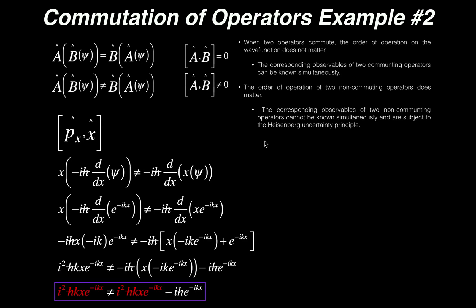In this video we'll look at an example of two operators that do not commute. We're going to use the position operator and the momentum operator in the x direction. For two operators that do not commute, we won't get the same thing on both sides of the equal sign — the order of operation matters. The momentum operator in the x direction is negative i h-bar times the first derivative with respect to x, and the position operator is just x. On the left side we'll first operate with momentum and then with position.